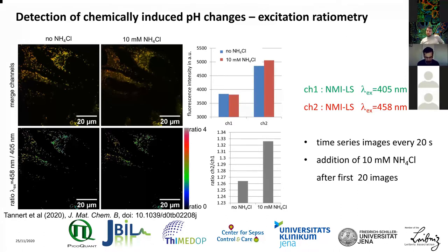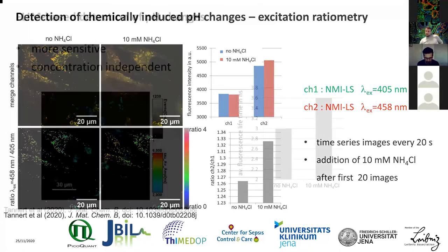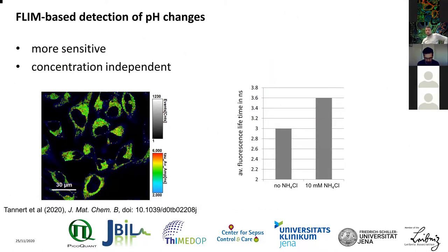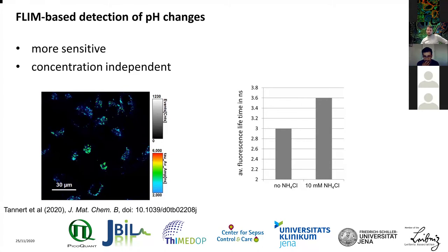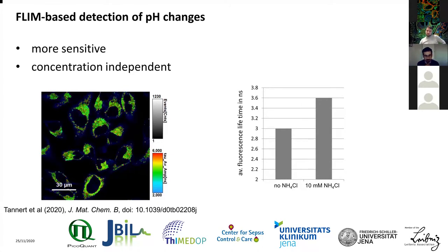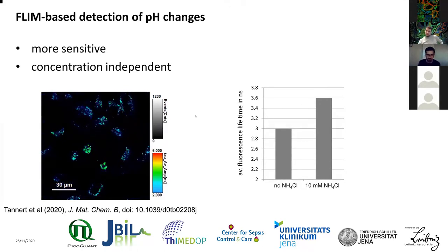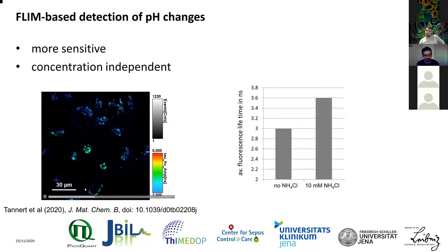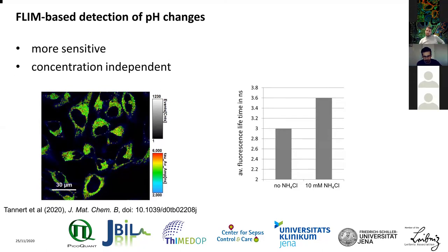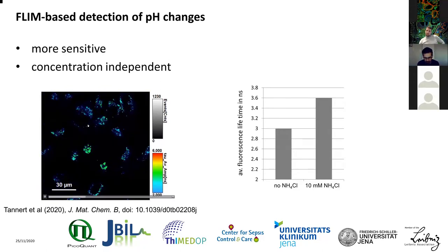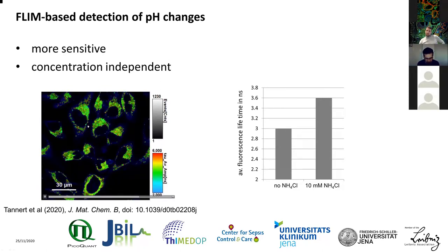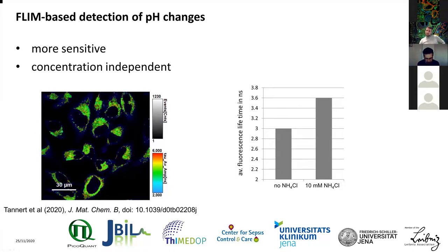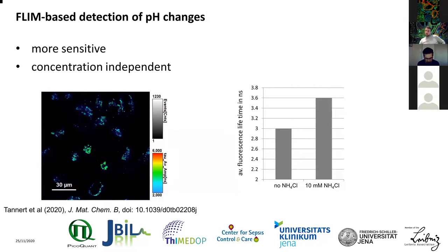That's the reason we switched to FLIM. FLIM is more sensitive and is also independent of the dye concentration within the cell. In this movie, you can see the average fluorescence lifetime before and after addition of ammonium chloride. Before addition it is lower, and after adding ammonium chloride the average lifetime increases — and this is the experiment I want to do with you during this workshop.